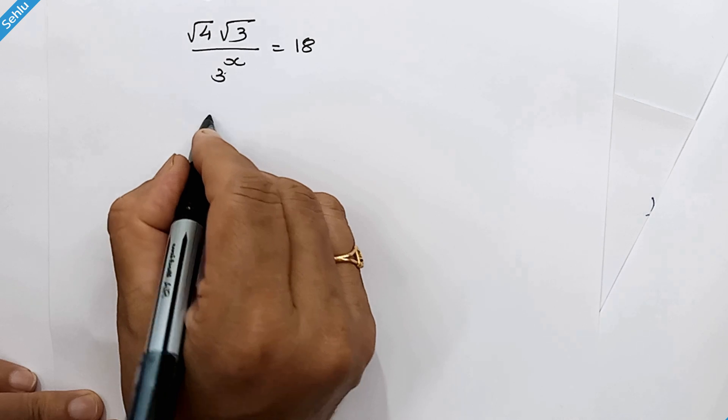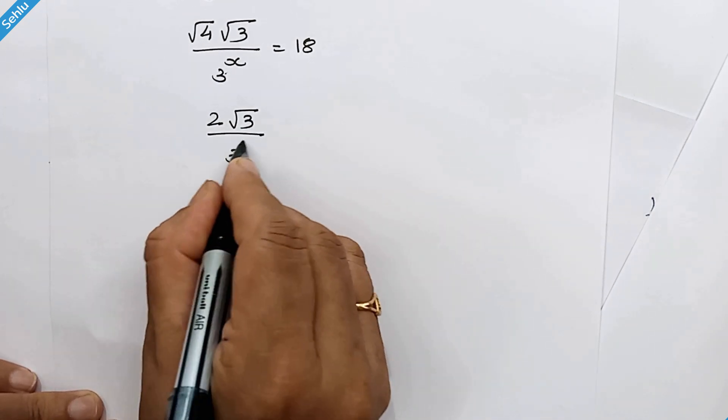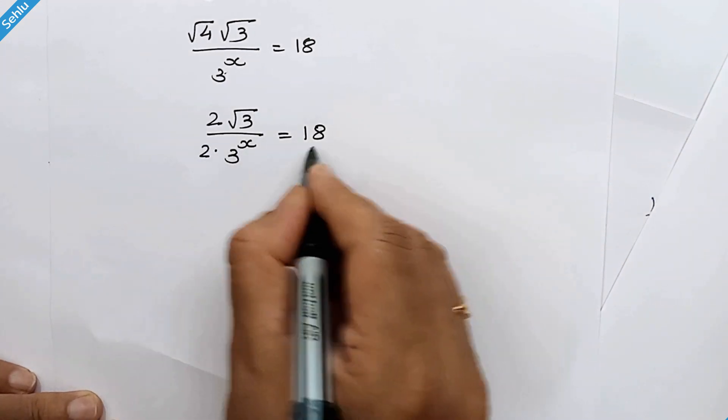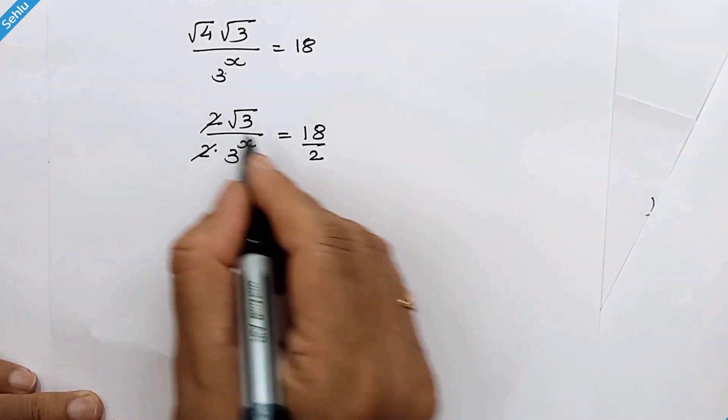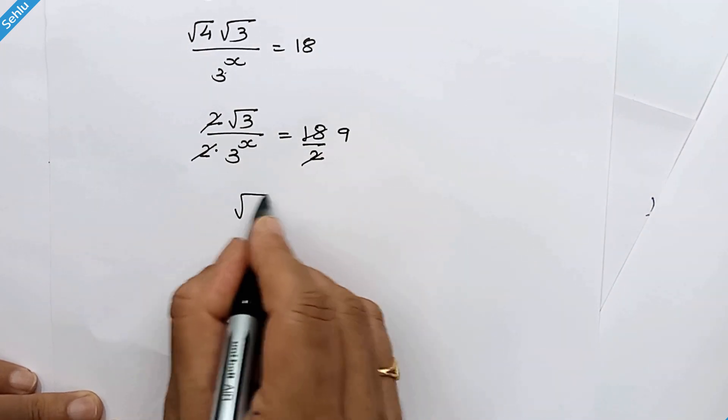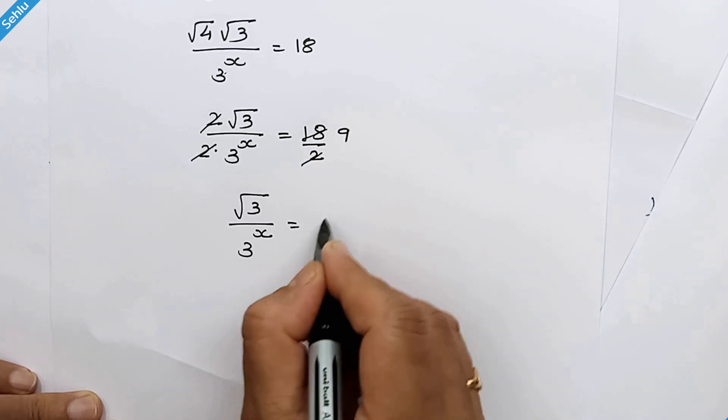Square root 4 is 2. And we will divide both sides by 2. So this 2 will eliminate and here we have 9. So we have square root 3 over 3 to the power x is equal to 9.